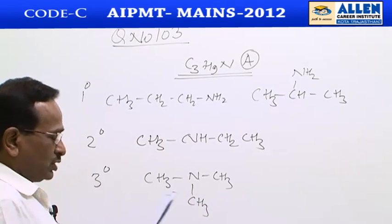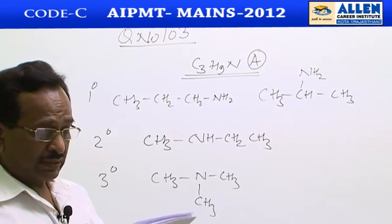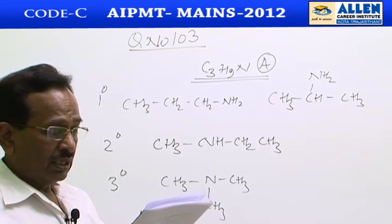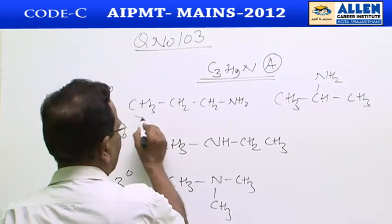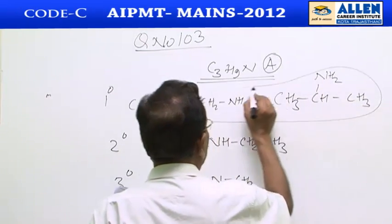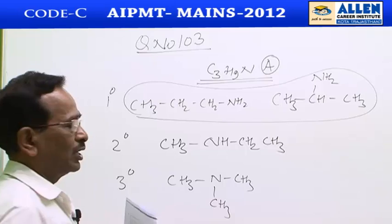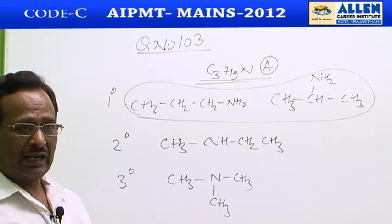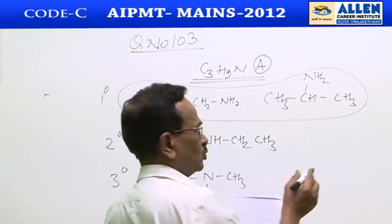Now the question shows that compound A treated with nitrous acid gives an alcohol. Only primary amines, propylamine and isopropylamine, give alcohol and nitrogen with HNO2.